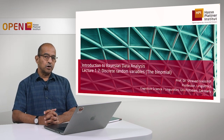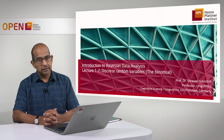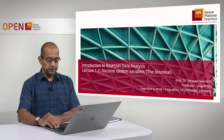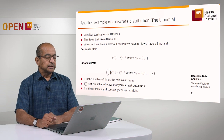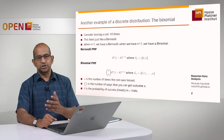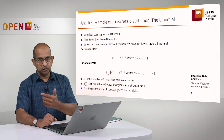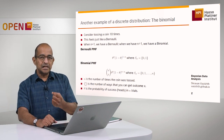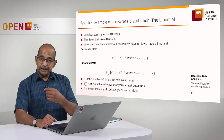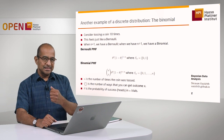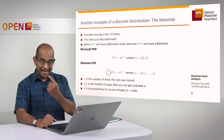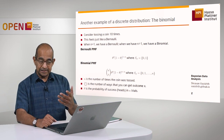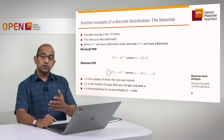In this lecture, I'm going to build on what we have just learned about the Bernoulli random variable, and show you a closely related example of another discrete random variable called the binomial. Consider the situation where we toss a coin 10 times. When you toss the coin only once, that is actually a Bernoulli random variable where n equals 1. But if n is larger than 1 — in this case n is 10 — we have a closely related random variable called the binomial.